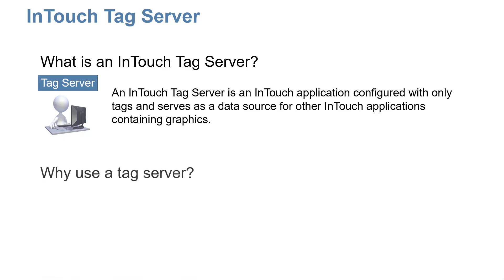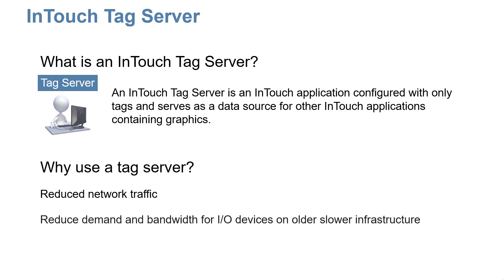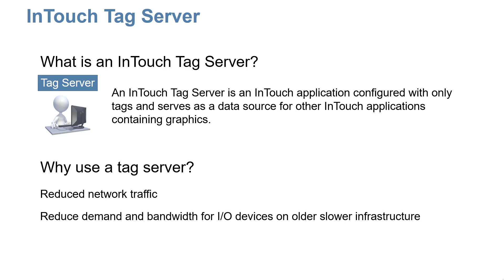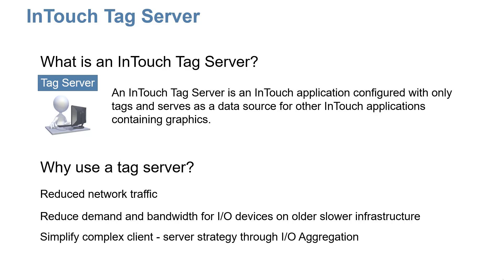Why use a tag server? You reduce network traffic, you reduce demand and bandwidth for IO devices — especially important on older, slower infrastructure — and you simplify complex client-server strategy through IO aggregation.